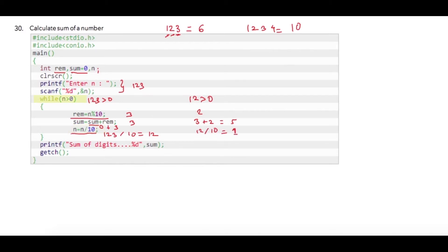So again we'll check the condition 1 greater than 0, which is a true condition. We'll have a fresh remainder 1 here, and then my current value of sum which is 5 plus 1, so sum will become 6. And then n will be again divided by 10, so n will become 0.